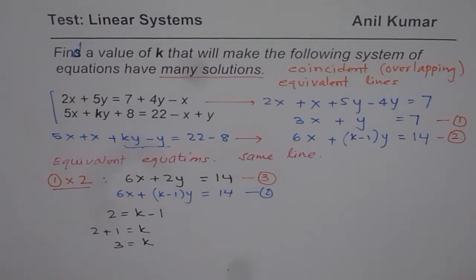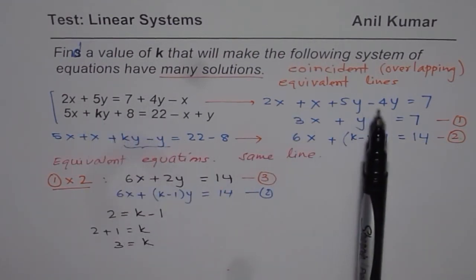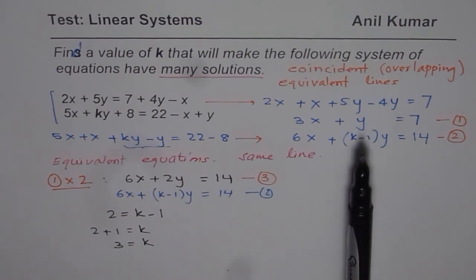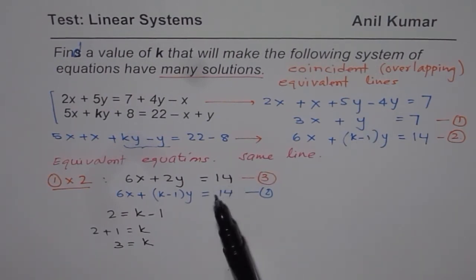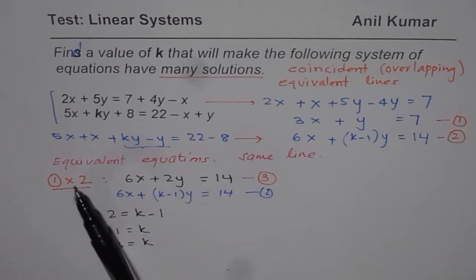Now the trick involved is combine the like terms, simplify your equations and then compare them. Before comparing, it is good to multiply by 2 so that you get exactly similar things. It becomes easier to compare. Is that okay? So I hope that helps.